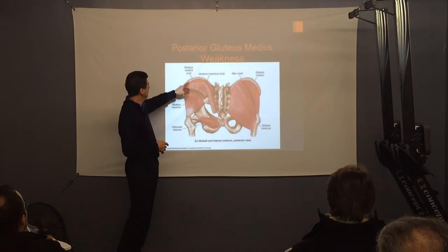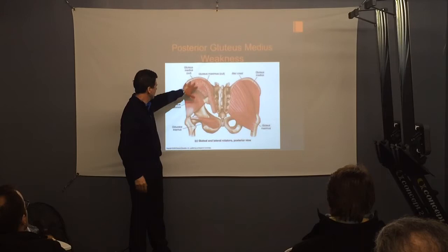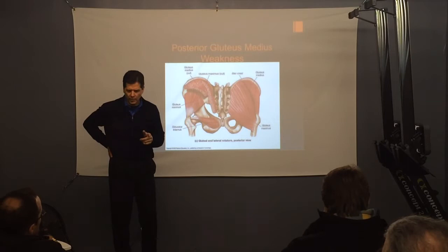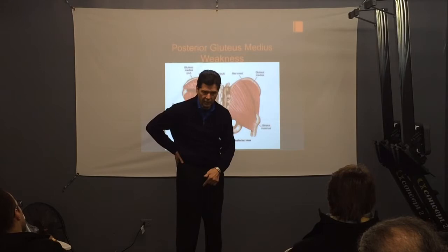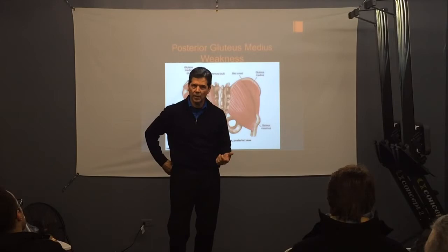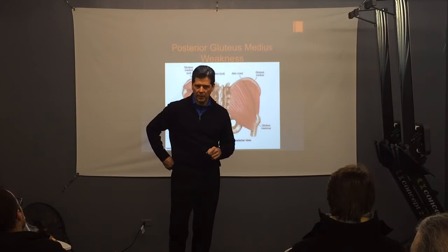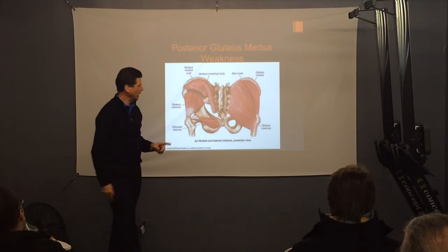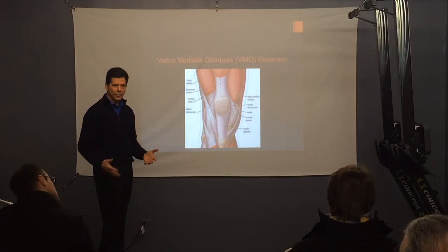Gluteus medius weakness — so we talked about your posterior gluteus medius. The posterior gluteus medius, kind of back in here, is real important because it helps to prevent the knee from going in. So keeping that strong — people do things on their sides called clamshells, that type of thing. It's real important that those be done properly. You've got to feel it working here and not down in the hip flexors. When they're weak, it's real easy for someone to do them wrong and end up strengthening the wrong muscle.